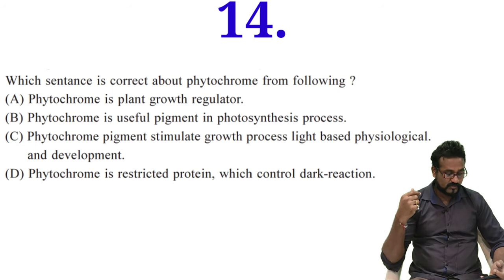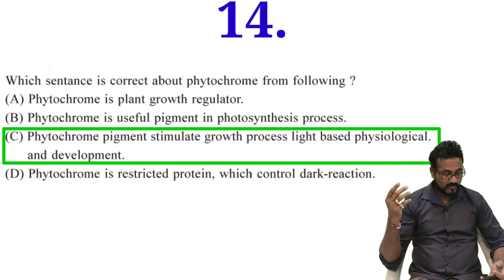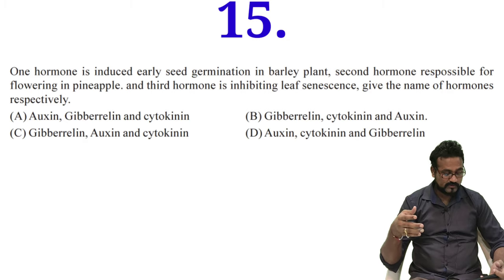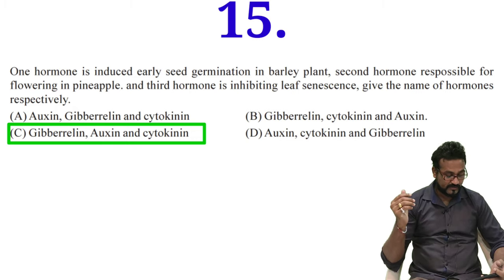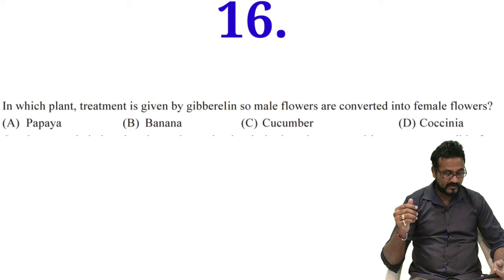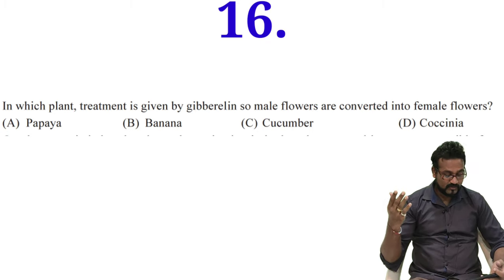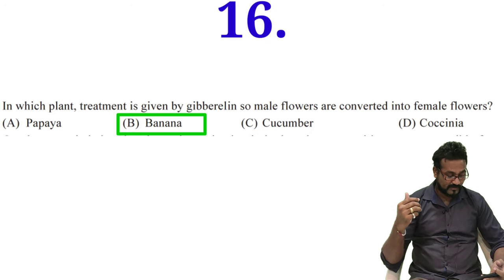I don't know what type of study material you are referring but these questions will be there. Please read the question carefully, which sentence is correct? Sentence C - phytochrome pigment stimulates growth. Fifteenth question, you may pause the video to read. One hormone induces germination, second hormone responsible for flowering in pineapple, and third hormone responds to senescence. So options are gibberellin, auxin, and cytokinin. Sixteenth question is in which plant treatment is given by gibberellin? Male flower converted into female flower. It is very well-known example of banana where you can give treatment of gibberellin to create them as female plant.